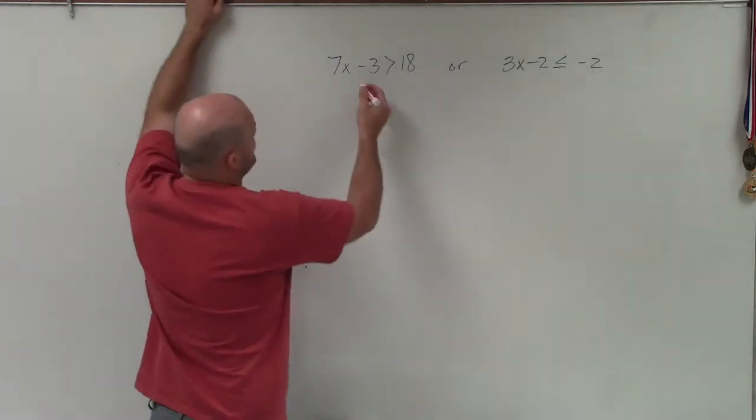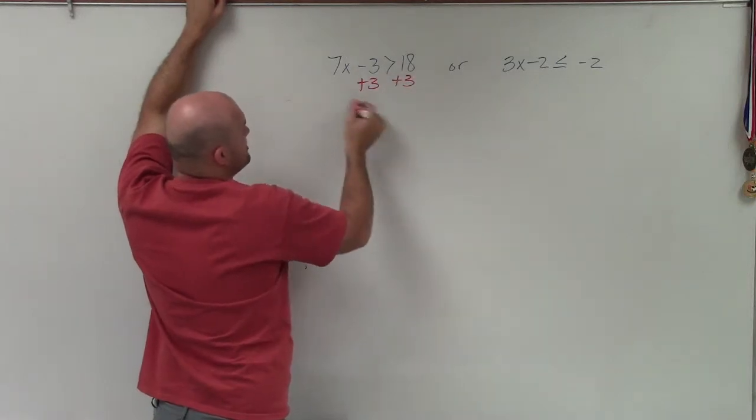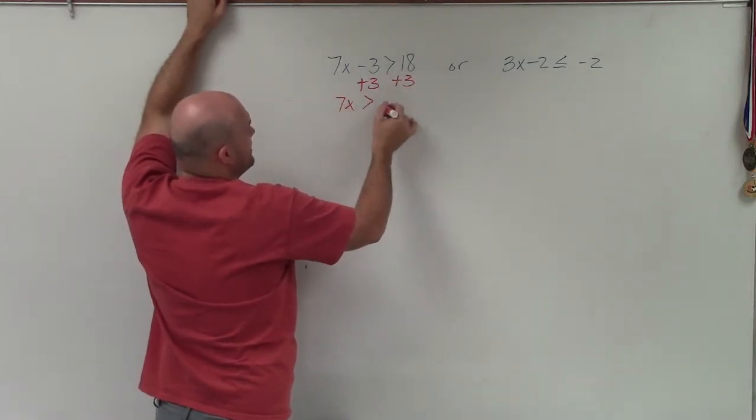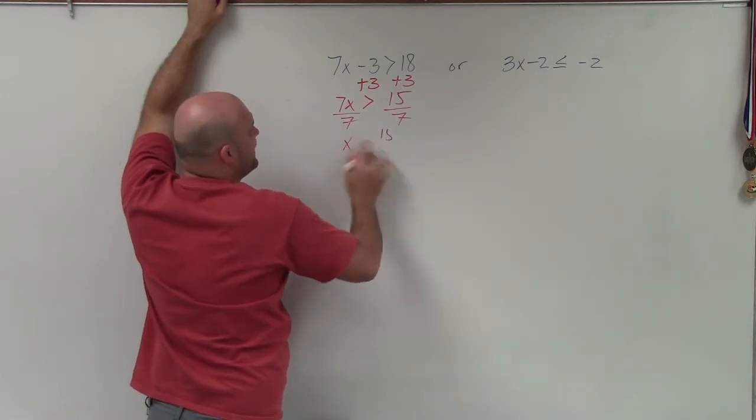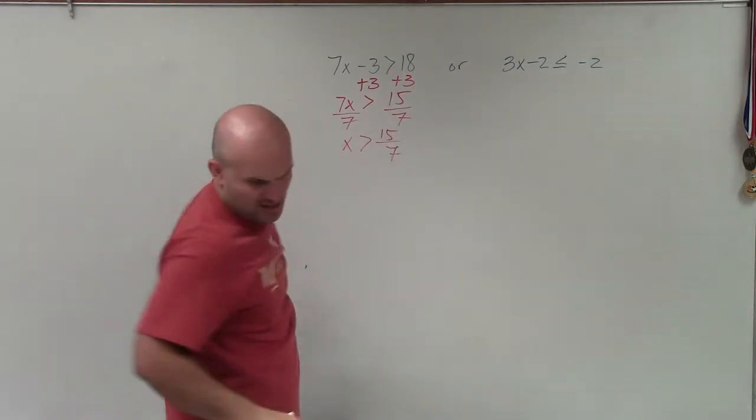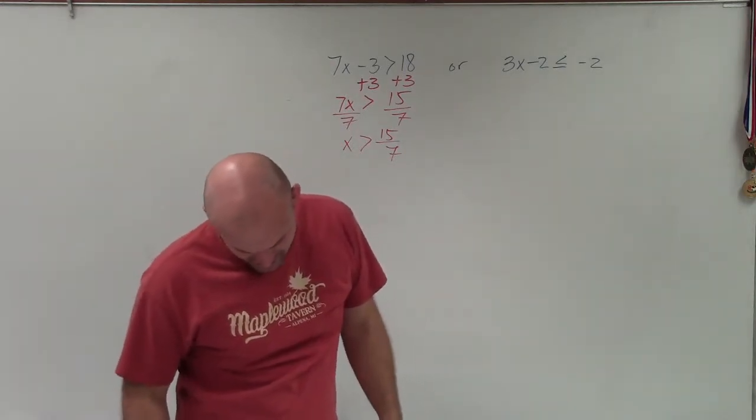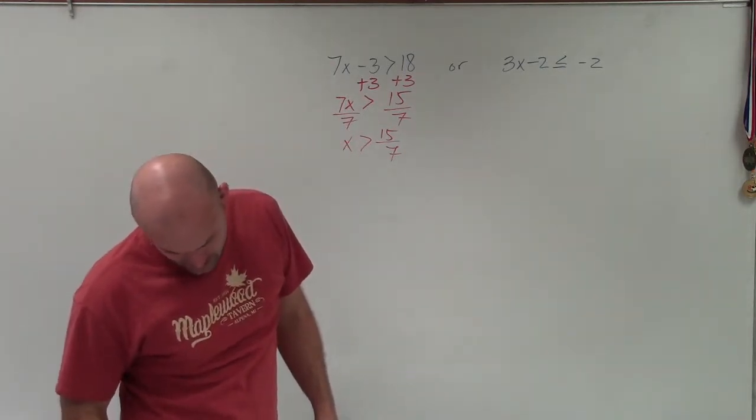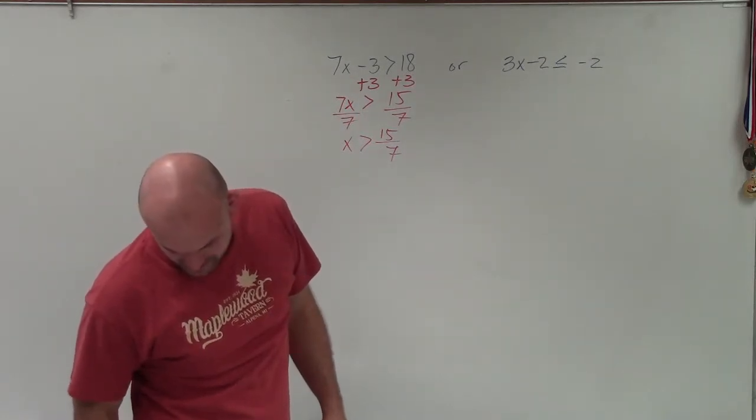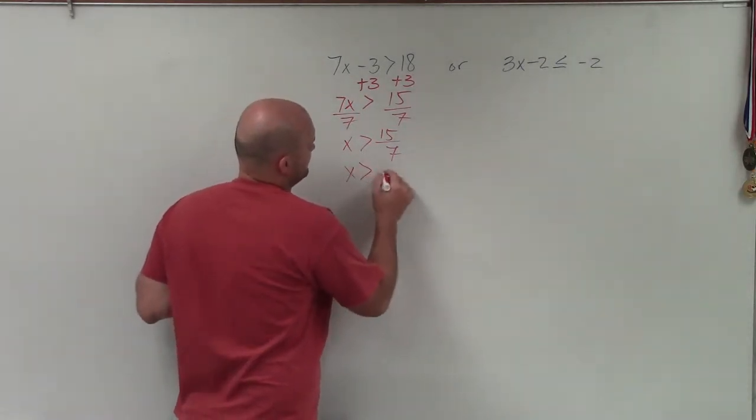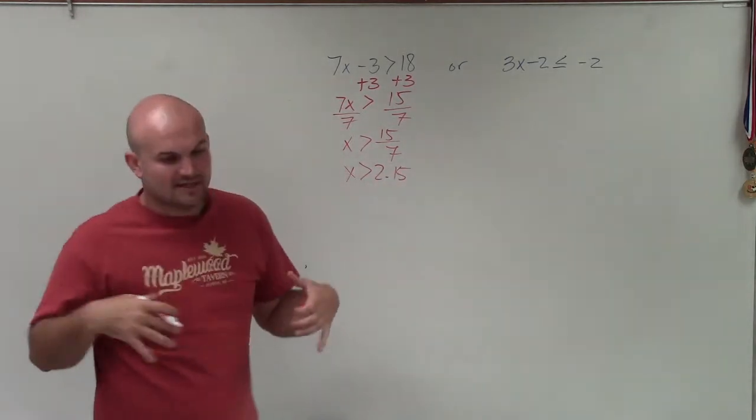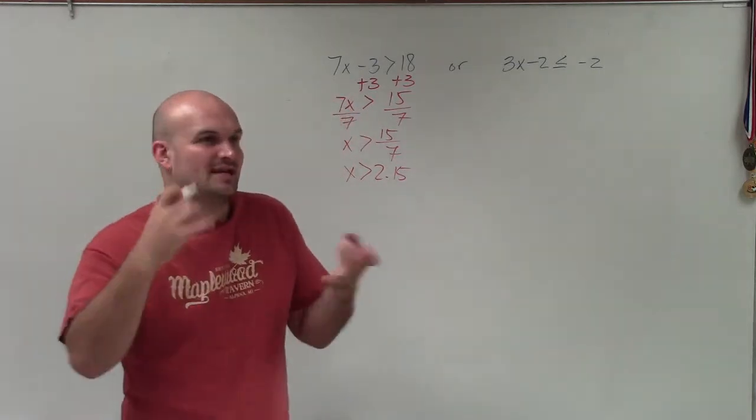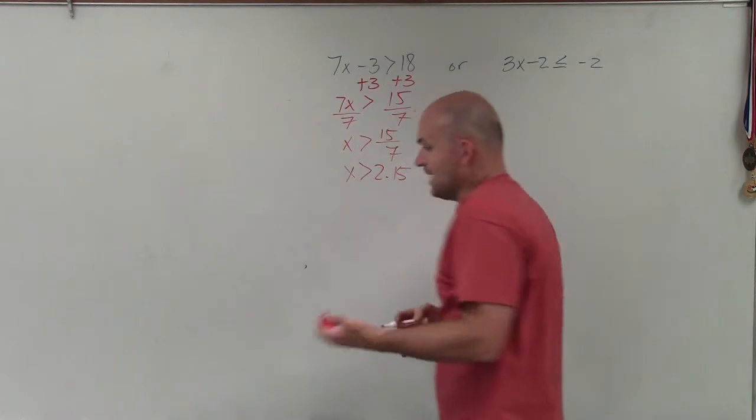So to solve here, all I'm simply going to do is use my inverse operations. So I have 7x is greater than 18 plus 3, which is going to be 15. Divide by 7, divide by 7. X is greater than 15 over 7, which I'm going to want to use my decimal. So I'll do 15 divided by 7, which is like 2.14 or 1.5. Yeah, 1.5. I'm just going to use the decimal version because I think it will be a little bit easier to represent and understand when we look at a line graph.